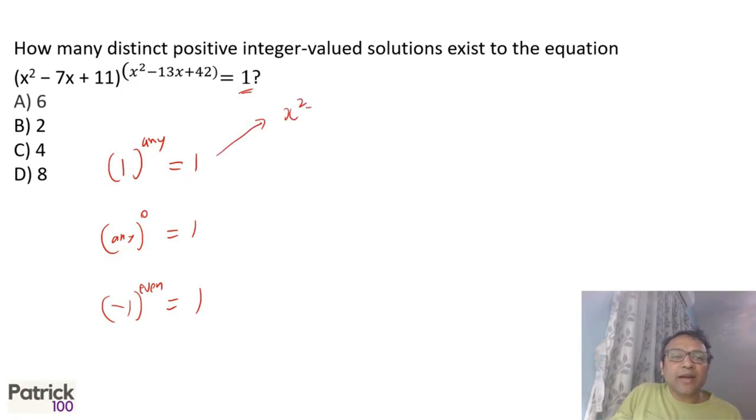In the first case, x² - 7x + 11 should be 1, or x² - 7x + 10 = 0. From that you get roots as 2 and 5. So two values which satisfy. In the second case, we have x² - 13x + 42 = 0. You directly get roots as 6 and 7. Product of roots is 42, sum is 13, so 6 and 7.